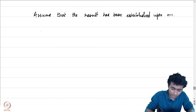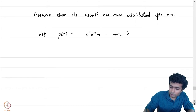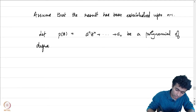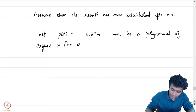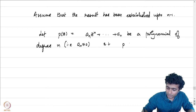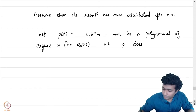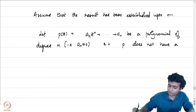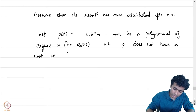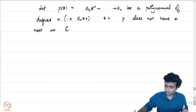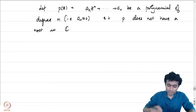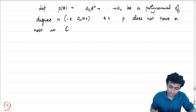Let P(z) = aₙzⁿ + ... + a₀ be a polynomial of degree n, meaning aₙ ≠ 0. Suppose for contradiction that P does not have any roots in ℂ. We will show this leads to a contradiction, forcing us to conclude that P has at least one root in ℂ.